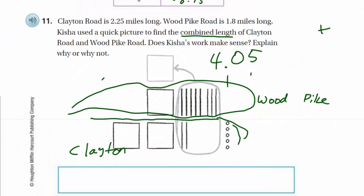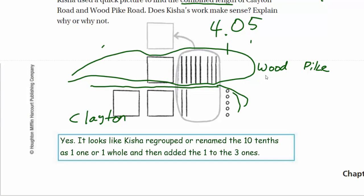Does Keisha's work make sense? I would say yes. She regrouped or renamed the ten tenths as one, one, or one whole, and added that one hole to the whole number. So, I'm going to go ahead and write those notes to my understanding here in the box. So, yes, it looks like Keisha regrouped or renamed the ten tenths as one hole, as one, one, I'm sorry, or one hole, and then she added that one to the three ones, giving us four, and five hundredths. Okie dokie.